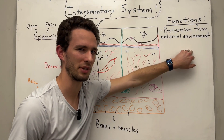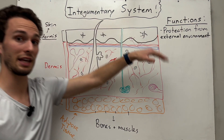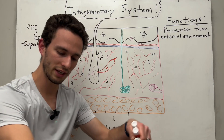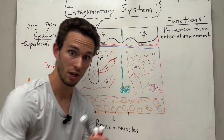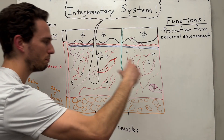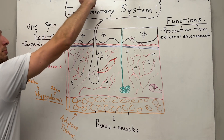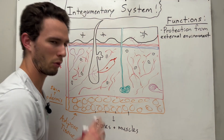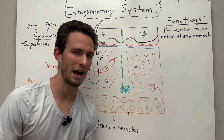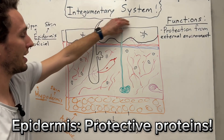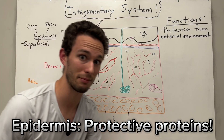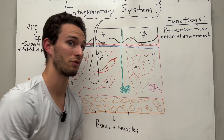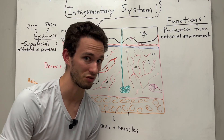Which part of the skin actually protects you from the outside environment? Well, the epidermis is more superficial — that means it's closer to the surface. So if you're looking at your skin right now, you're actually looking at epidermal tissue. The external environment comes directly into contact with that epidermis, so that's the main layer for protection. It has a lot of protective proteins, and we also have white blood cells in here that protect us from pathogens.